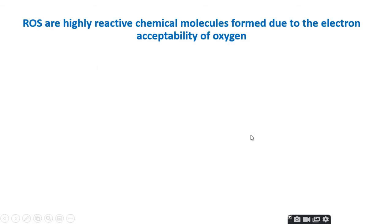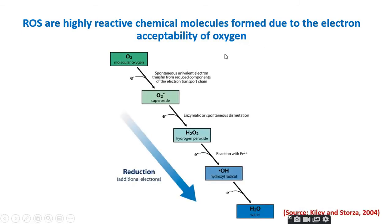ROS are highly reactive chemical molecules formed due to the electron acceptability of oxygen. This diagram shows the ultimate product of oxygen such as the electron transport chain forming water, but if the oxygen molecule is less loaded by electrons before forming water, it can produce these reactive oxygen molecules.